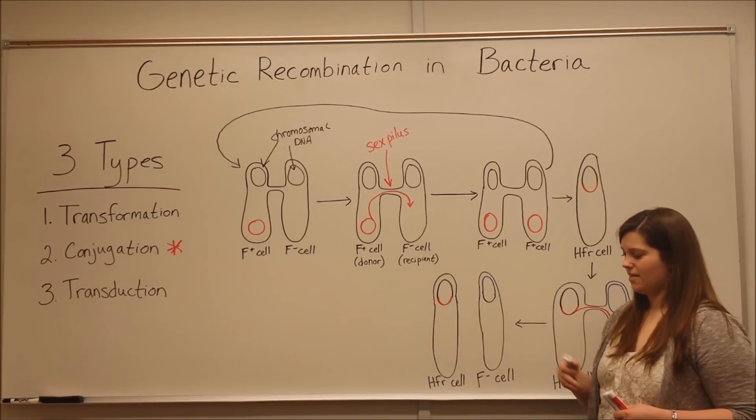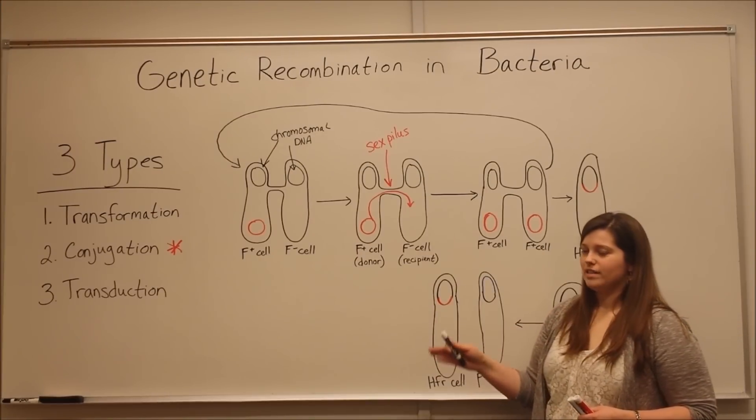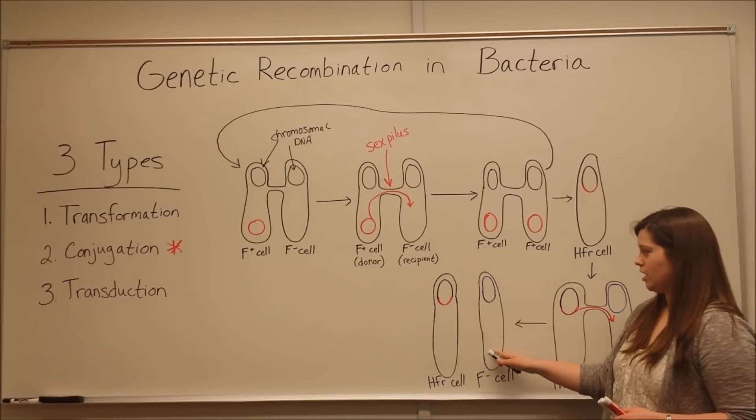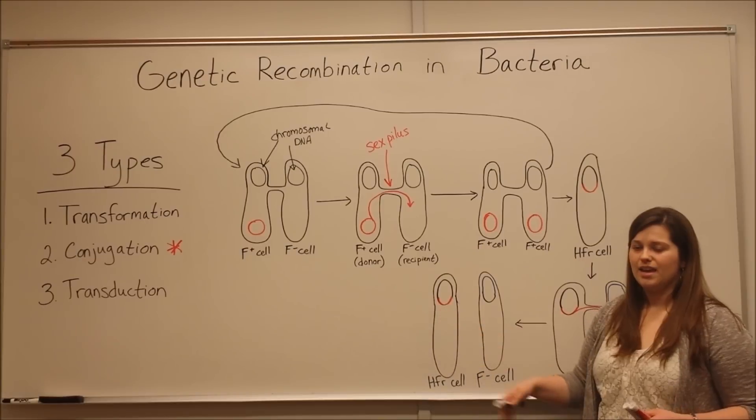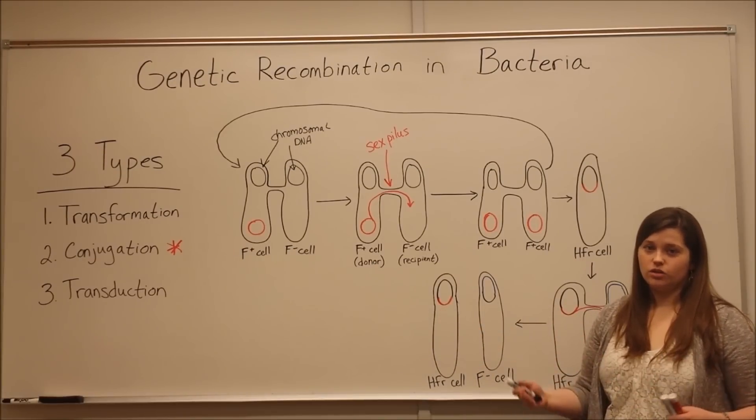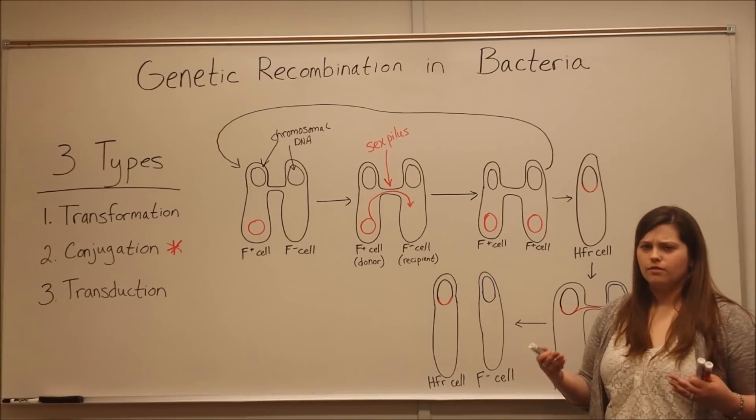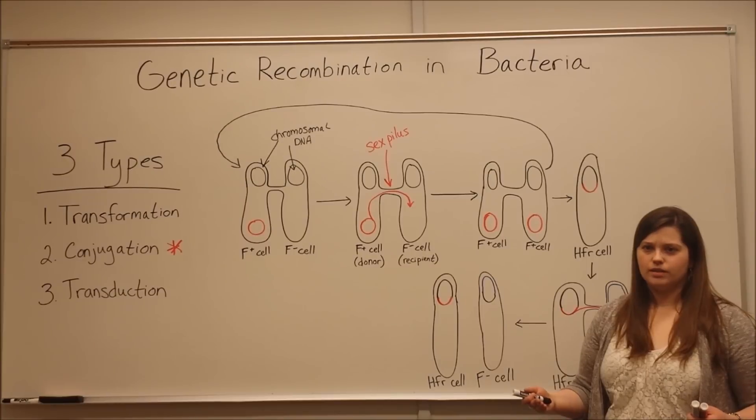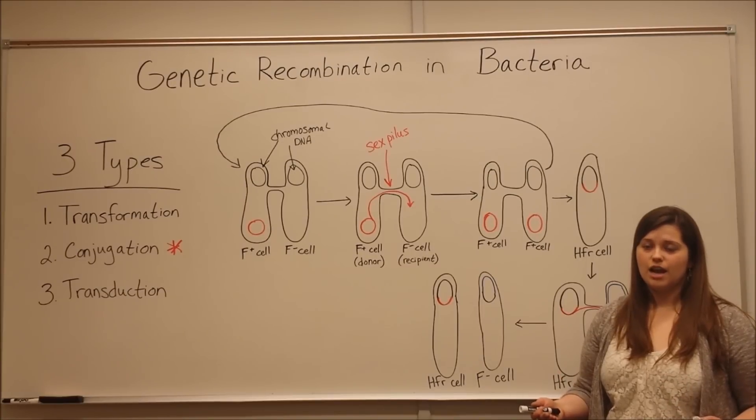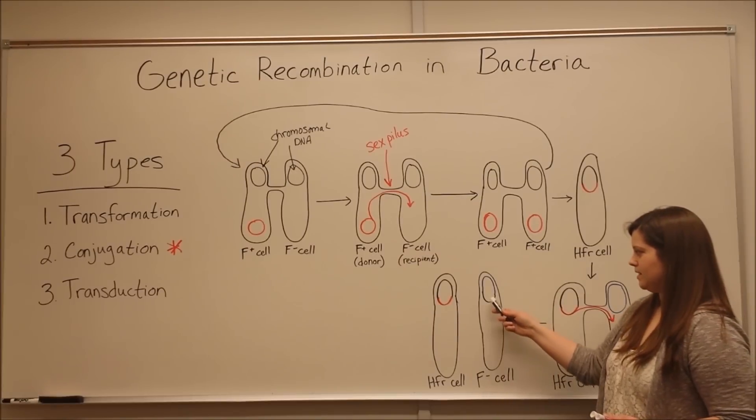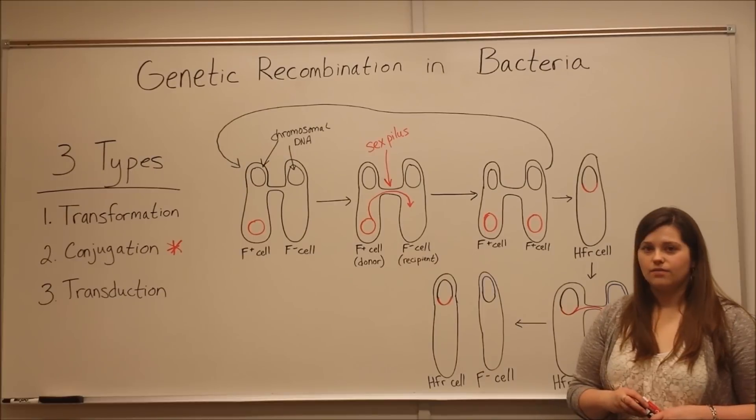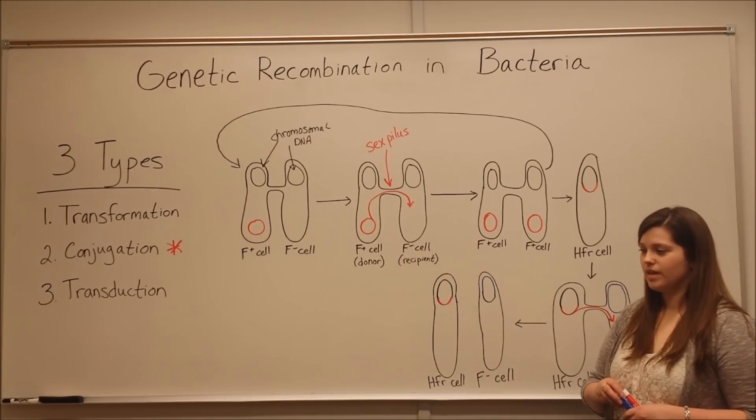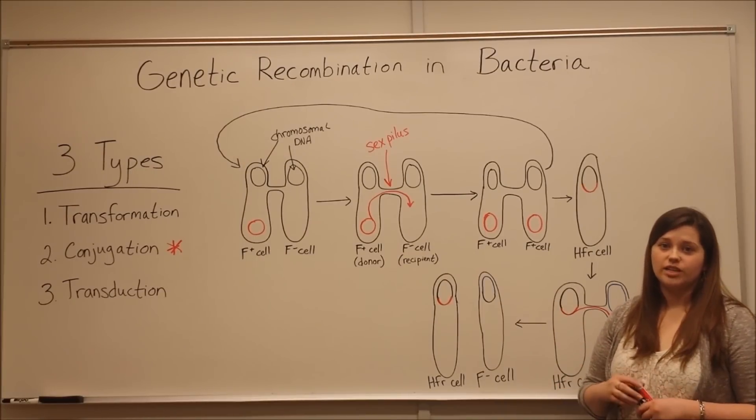This F-minus cell, while not capable of further conjugation on its own because it's missing the fertility plasmid DNA, may have acquired additional functionality like virulence factors, antibiotic resistance, or toxin production, simply because it's gained this extra DNA. So this is how conjugation gives bacteria cells these additional changes.